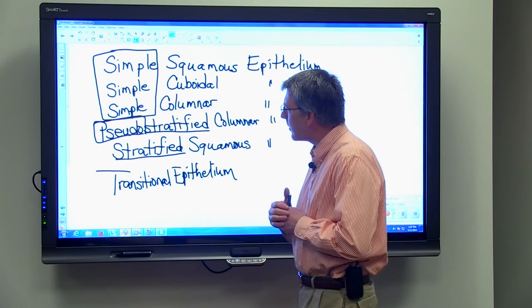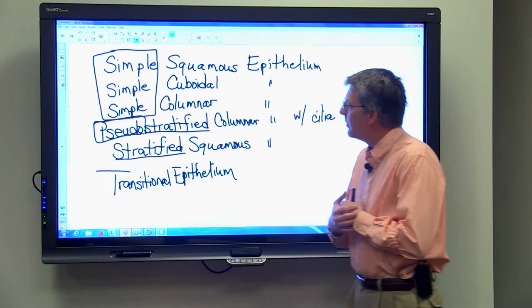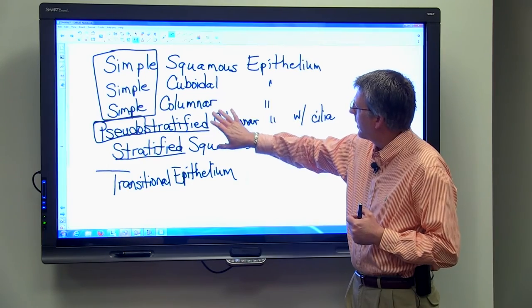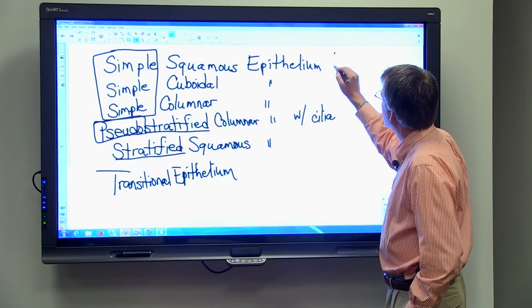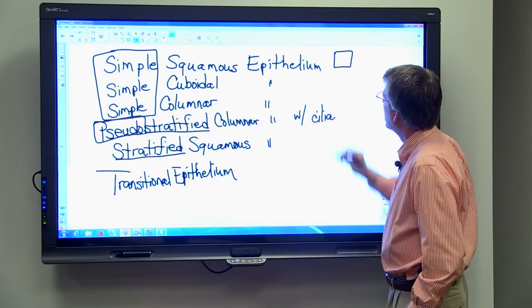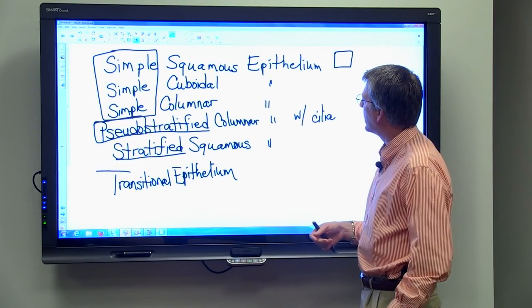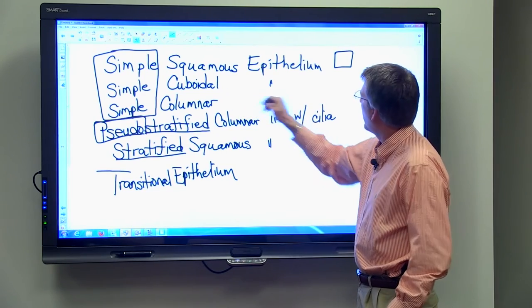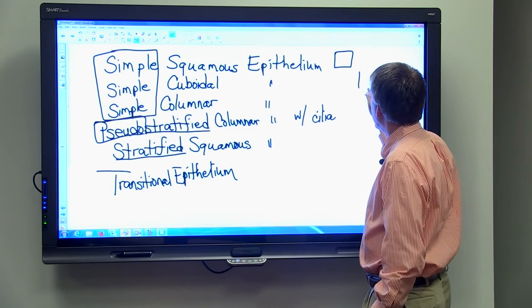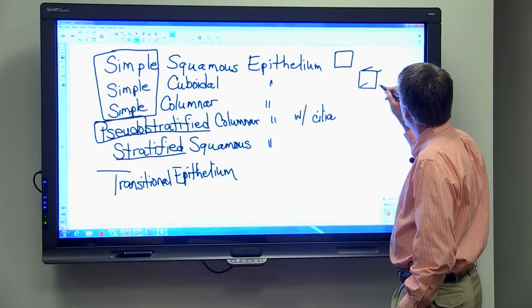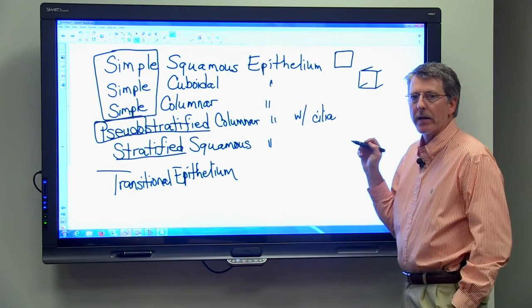The other thing that I'll point out that will help you remember these tissues is the other terms here. Squamous, of course, just means square. So when you think about a squamous cell, think about a square cell. Now, cuboidal sounds like cube, same kind of thing, but instead of thinking about a square, think about a cube.